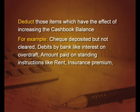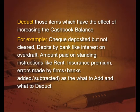For example, checks deposited but not cleared, debits by the bank like interest on overdraft, and amounts paid on standing instruction of the customers like rent and insurance premium — all these things will be deducted. Errors made by the firm or bank will be added or subtracted as the case may be. We will then arrive at balance as per pass book.